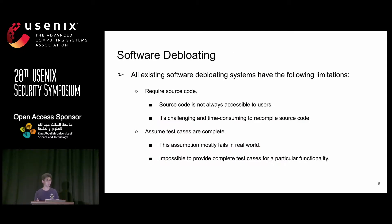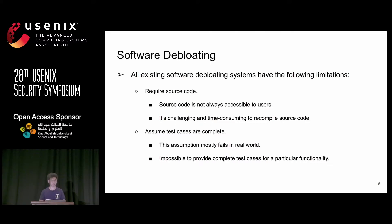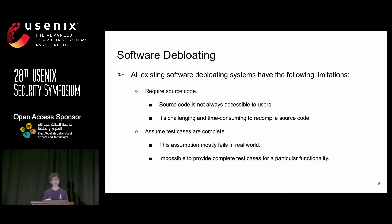After realizing the problem caused by bloated code, researchers proposed software debloating to remove unwanted code for particular functionalities. However, all existing debloating systems have limitations. First, they all require source code, but source code is not always accessible, and even when accessible, recompiling is challenging and time-consuming — for example, it takes hours to recompile Clang. Second, they assume test cases are complete, but this assumption mostly fails in the real world because even experts cannot provide a complete test case for a particular functionality.